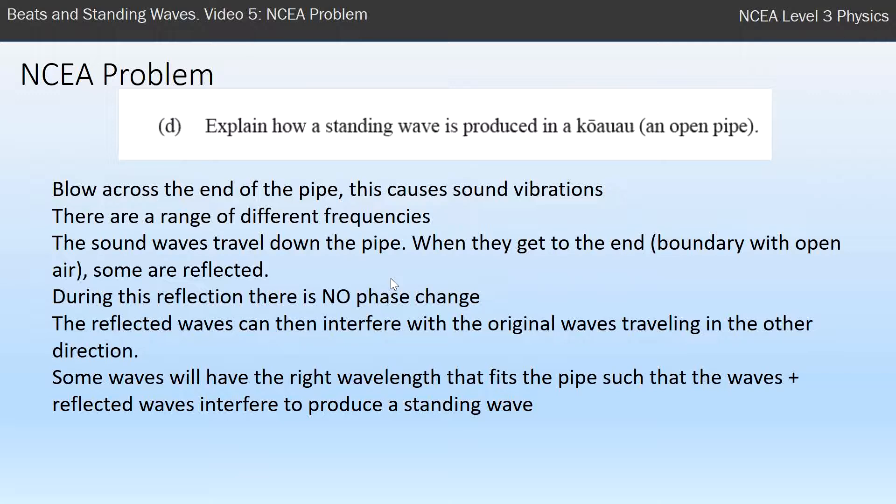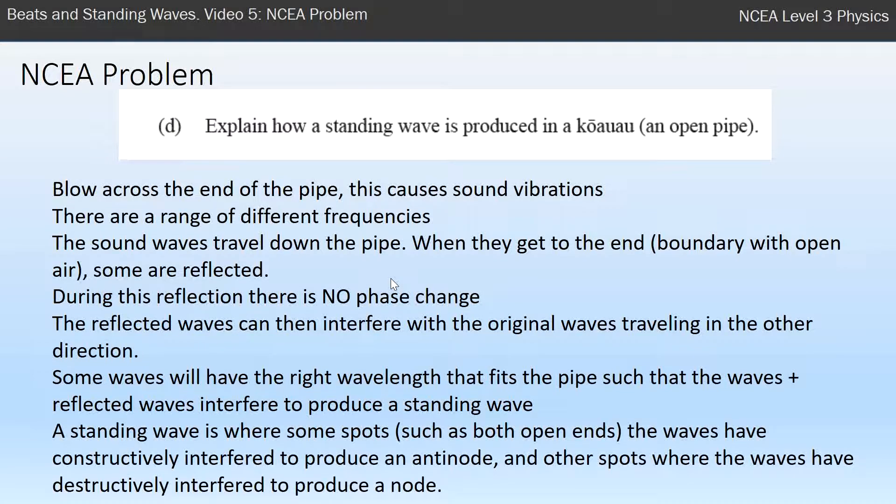It only happens nicely when we have waves that have the right wavelength or frequency that fits the pipe in such a way that the reflected waves and the original waves produce the standing wave. Only certain waves fit, so not all of the frequencies that are made go on to make standing waves. The standing wave has some spots—especially at both ends—where the waves constructively interfere to produce that antinode where there's a lot of displacement and vibration. There's other spots where the waves have destructively interfered and cancelled out completely, and that produces a node.